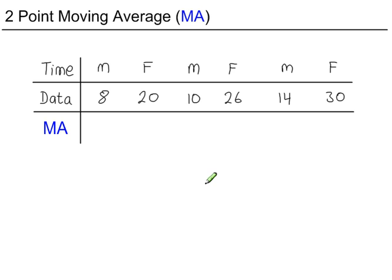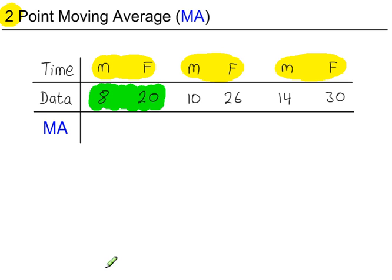In this time series, data is collected twice weekly — Monday and Friday — so we're going to work out a two-point Moving Average. Take the first two data values, add them up — that's 28 — divide by 2, that's 14, and you write the 14 here. It should go in between these two values, right in the middle.